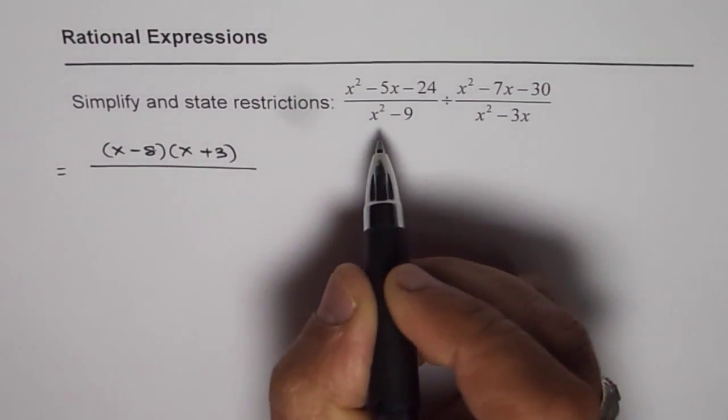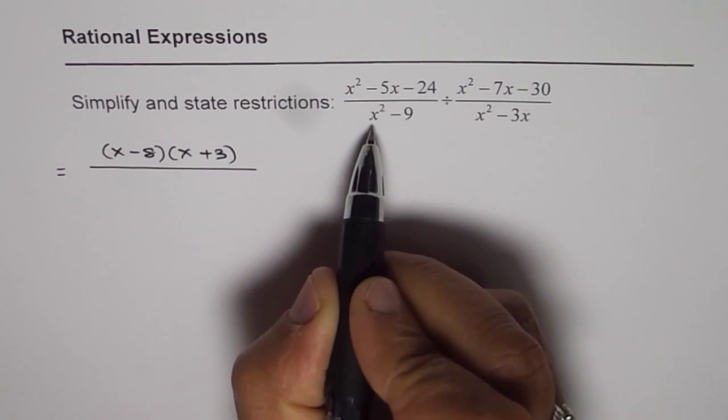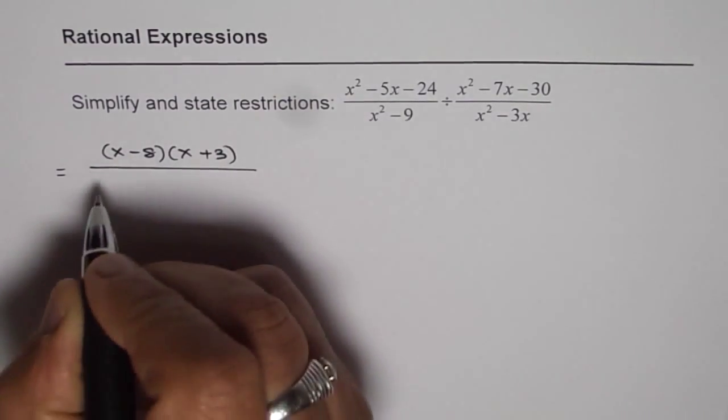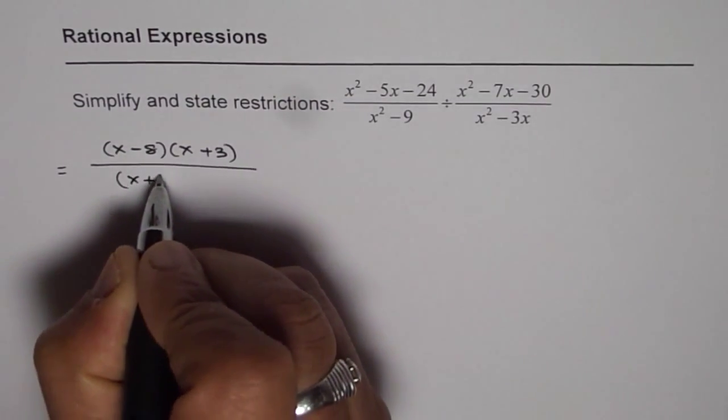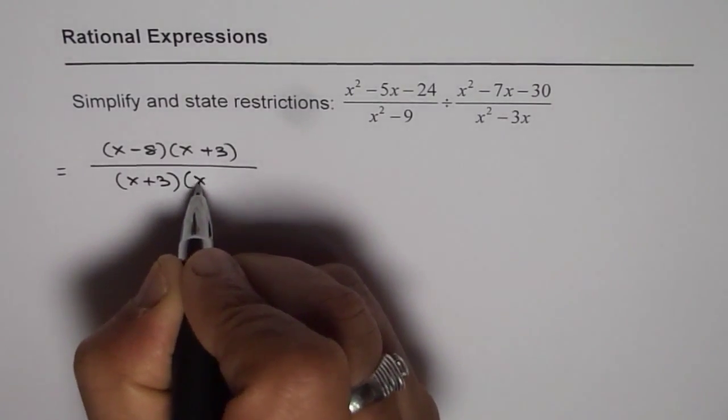The denominator of the first factor, x squared minus 9 is a perfect square. So, it could be written as x plus 3 times x minus 3.